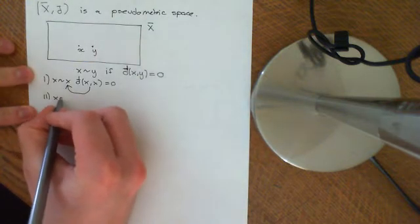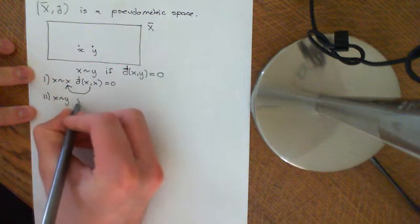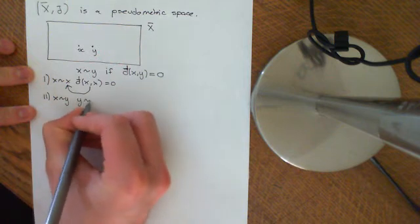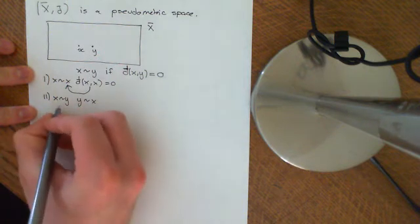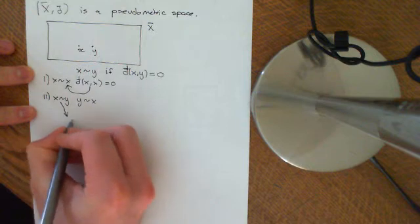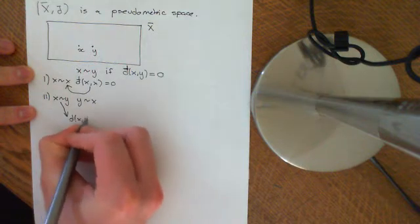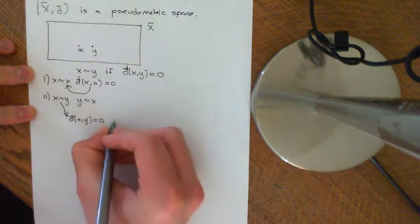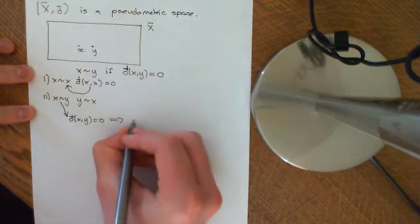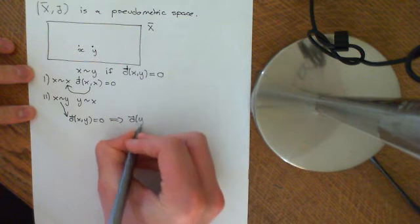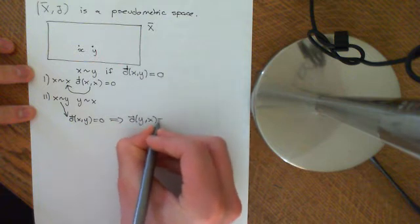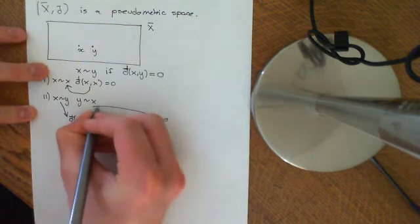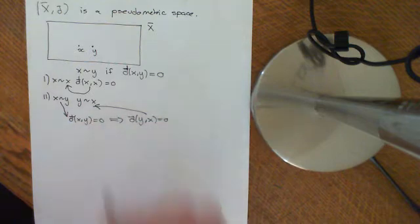Second, we want symmetry. If x is related to y, we want that to imply y is related to x. Well, if x is related to y, that implies d̄(x, y) = 0, which implies by symmetry of the pseudo-metric that d̄(y, x) = 0, and this implies that y is related to x. So we have symmetry.